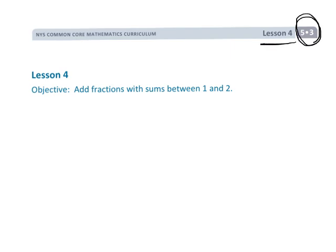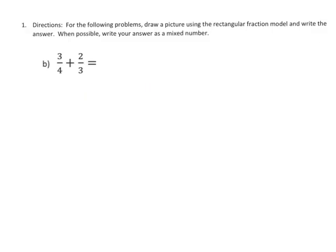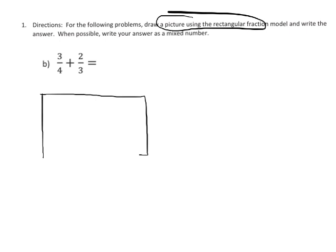This is fifth grade module 3 lesson 4. We're going to be adding fractions using the area model, but now we're going to end up with improper fractions — fractions that are between 1 and 2 — and we'll convert those to a mixed number whenever necessary. We're going to continue drawing pictures using the area model. I'm going to go pretty fast because in lesson 3 we already did this slowly and carefully.